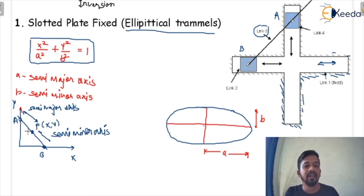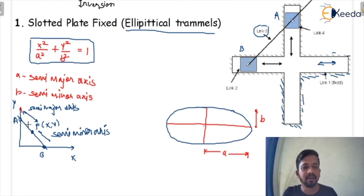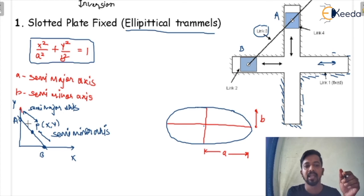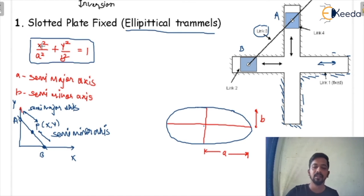The position of point P can vary — it may be here, it may be there, it can be anywhere. You must know how to find the semi-major axis and the semi-minor axis. Once you find the semi-major and semi-minor axis, you can get the equation of the ellipse.